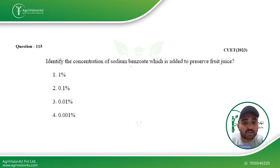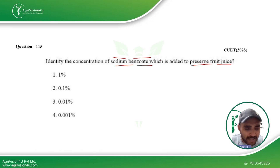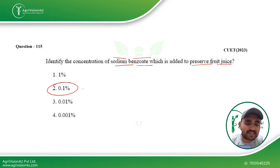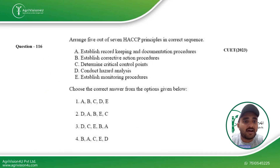Coming to the next question: identify the concentration of sodium benzoate added in preserved fruit juice. Sodium benzoate is one of the primary preservatives used in fruit juice. 0.1% is the concentration usually added in fruit juice, so the second option is the answer for this question.